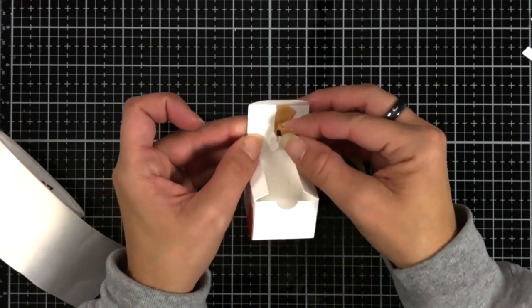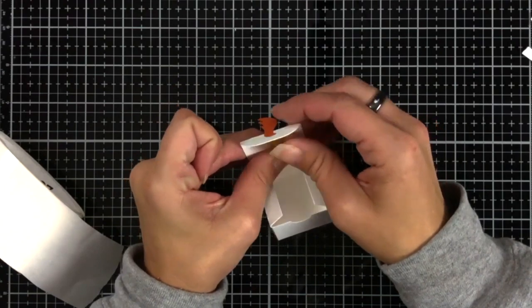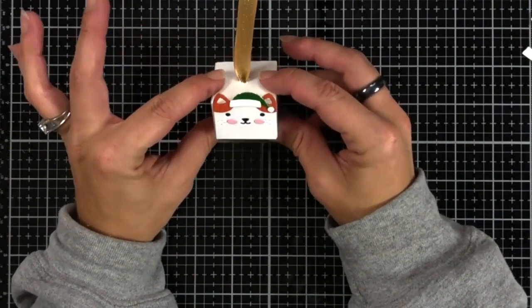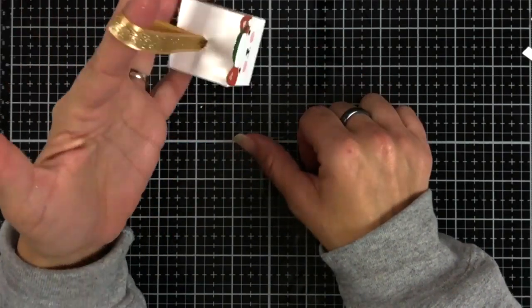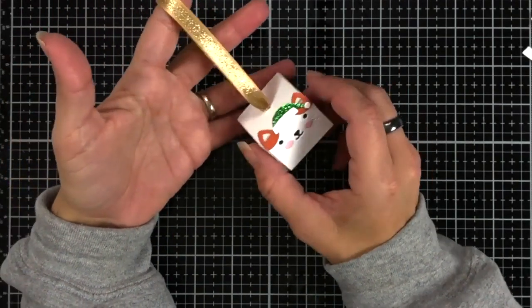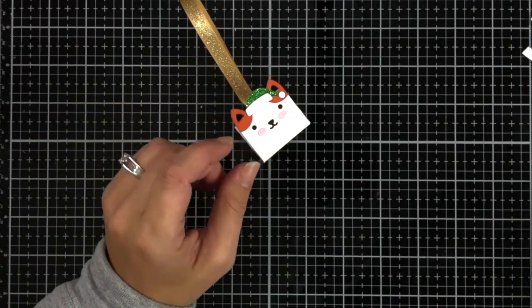This actually is my preferred way of doing it because it is cleaner on the inside of the box and it's covering up any messy holes that I made. And it really secures it so that you can hang that from your tree.